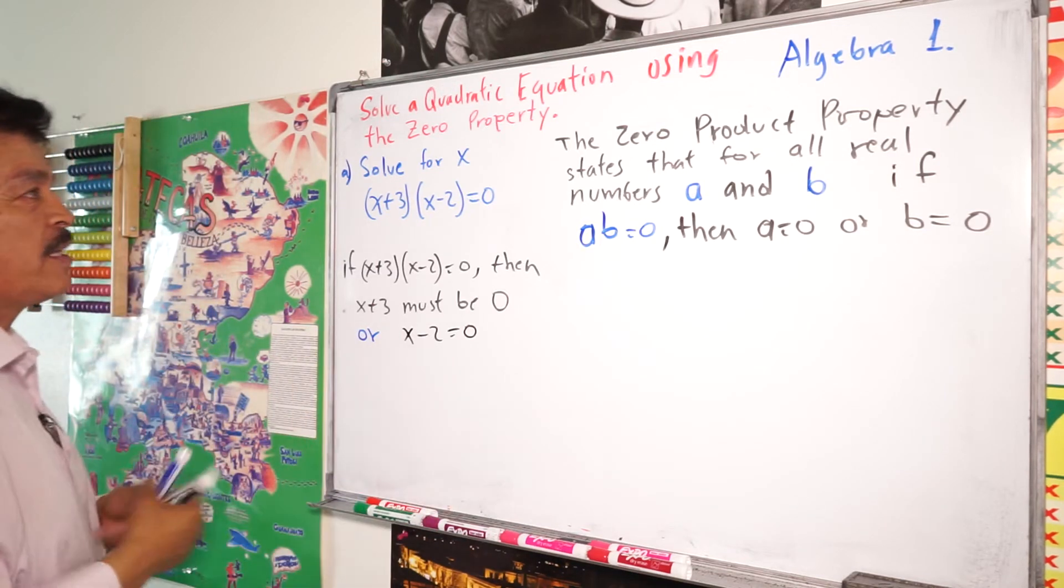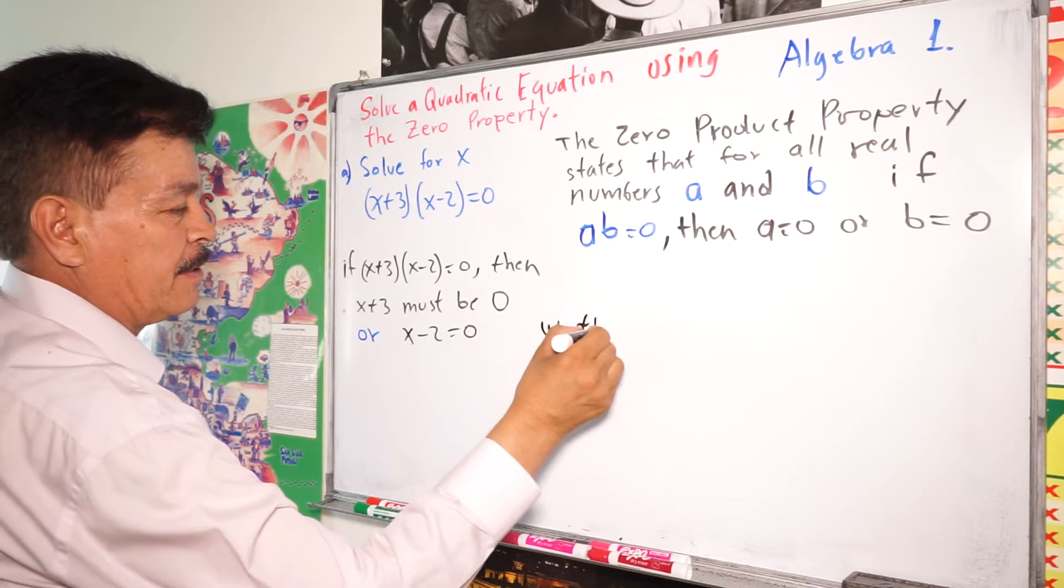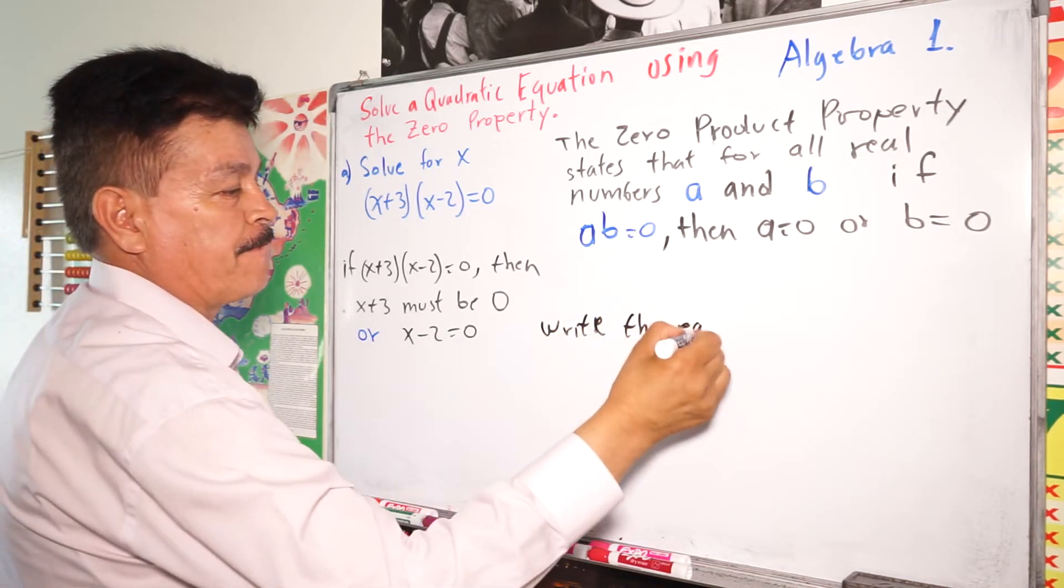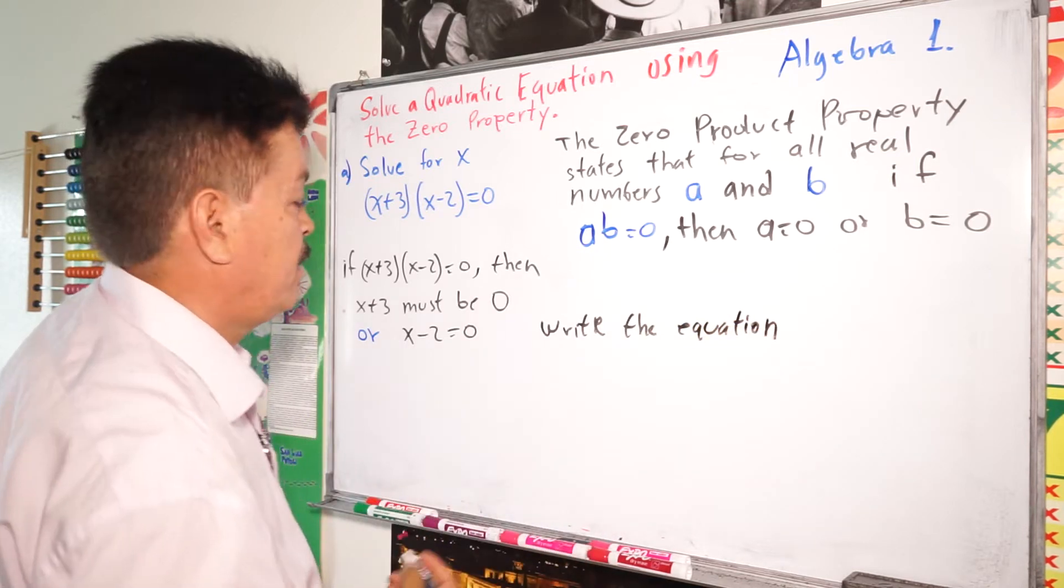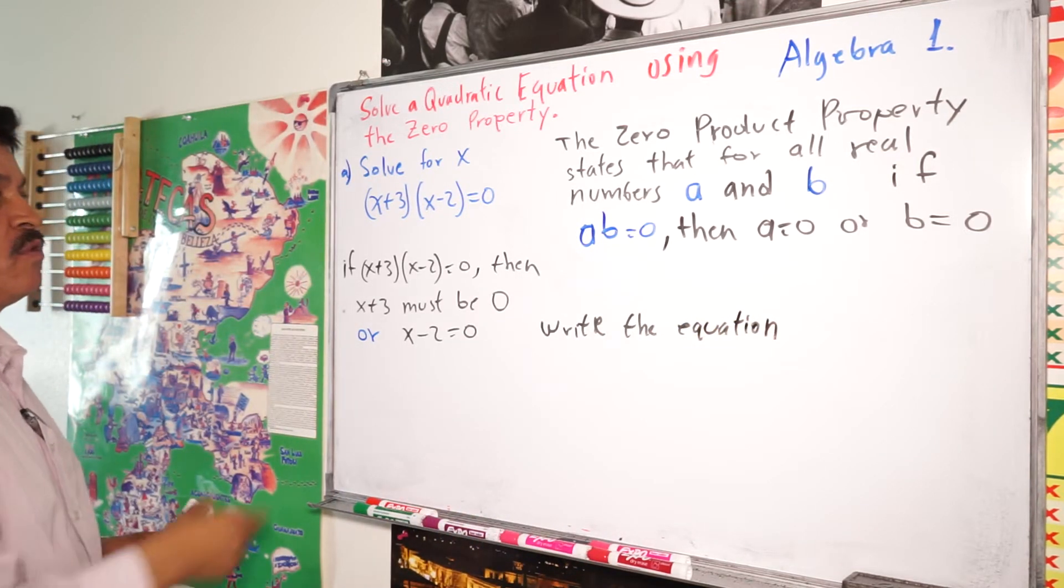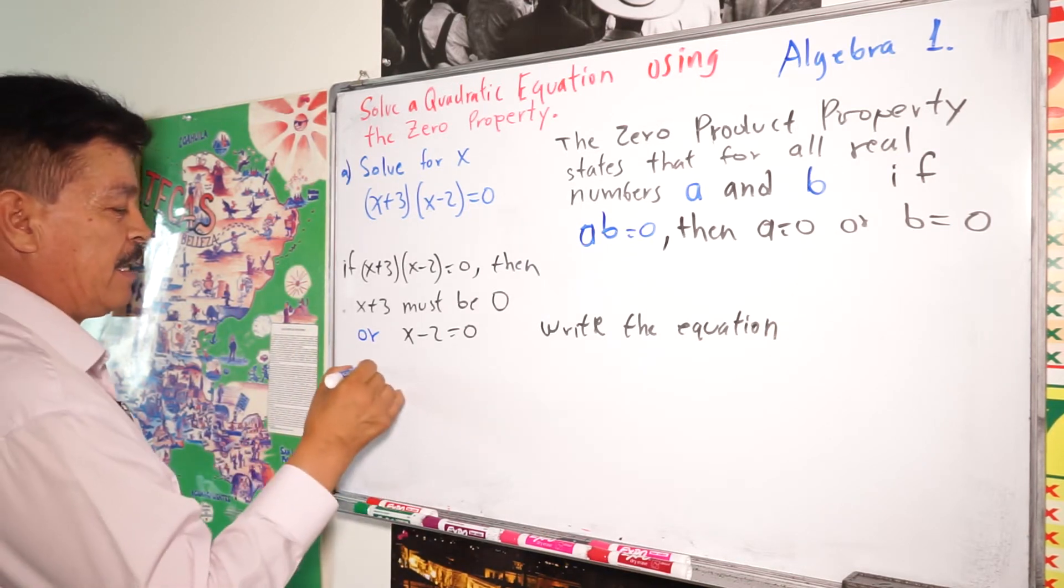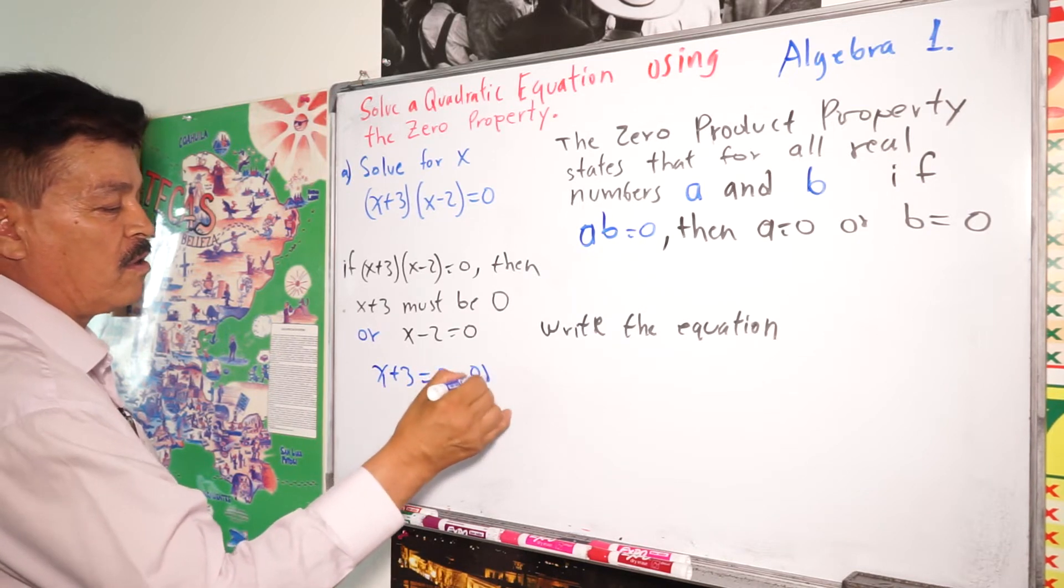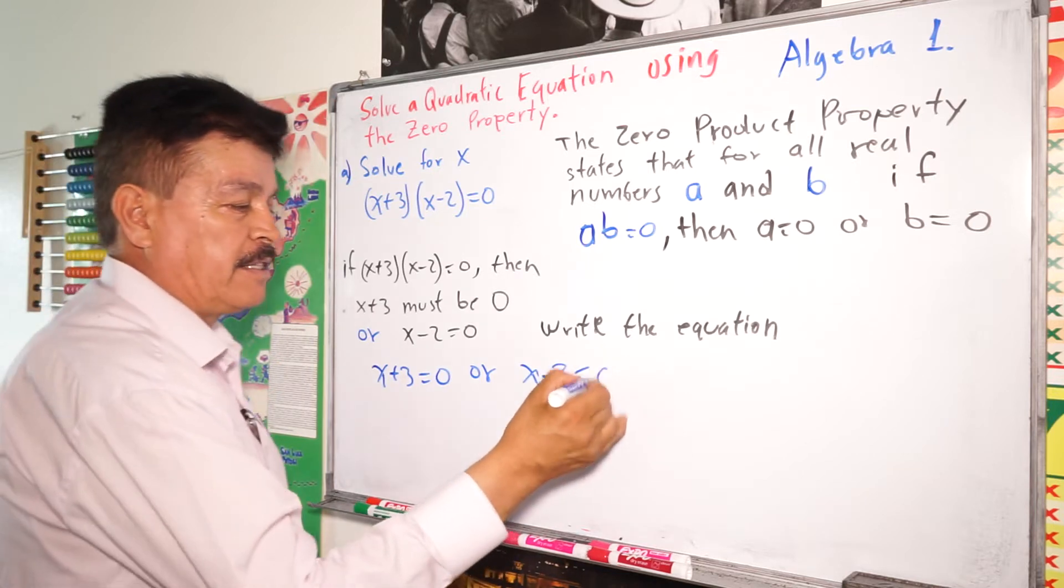So write the equation. Write the equation and solve for x. We have to solve for x. So then, we are going to have here x+3 = 0, or x-2 = 0.